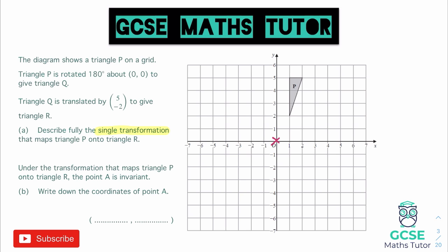I'm going to do this without the tracing paper method. I'll draw a line to the rotation point — that is two squares down and one across. Rotating 180 degrees, the shape will be in a flipped orientation. A 90 degree rotation would take that point to one position, 180 brings it to here, and 270 clockwise or 90 anticlockwise would take it just there. So I know where the point goes. This triangle is now going to go three squares down, one across, then reconnect — and that's my 180 degree rotation, giving triangle Q.